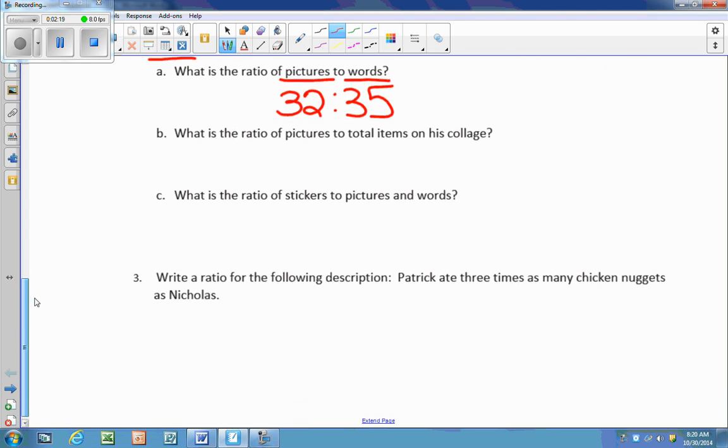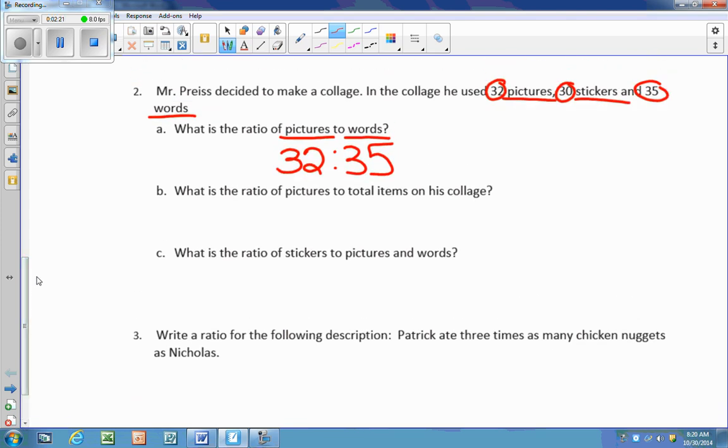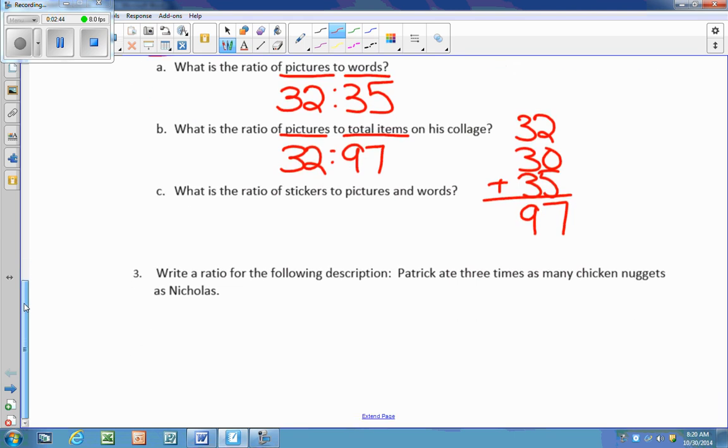What is the ratio of pictures to total items? Well, again, I'm going to start with my pictures, which is 32. And then I have to figure out the total of all the items. So I'm going to take the 32, the 30, and the 35 and I'm going to add them up together. And that's going to give me 97. So my final ratio will be 32 to 97.